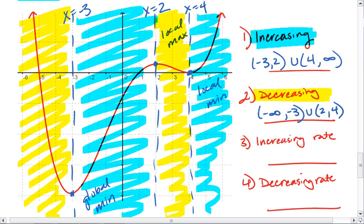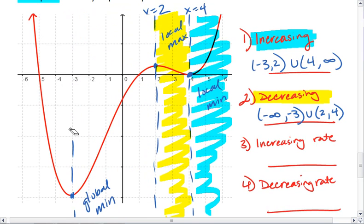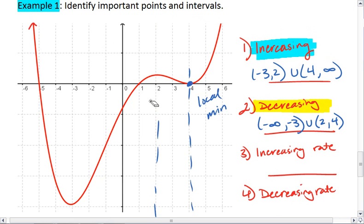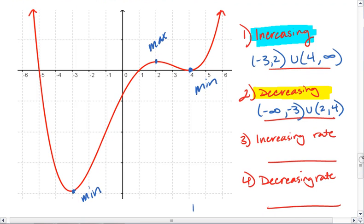Now let's discuss the increasing and decreasing rates. I'm going to put back my mins and max points, but to figure out the rates, I want to first identify points of inflection.